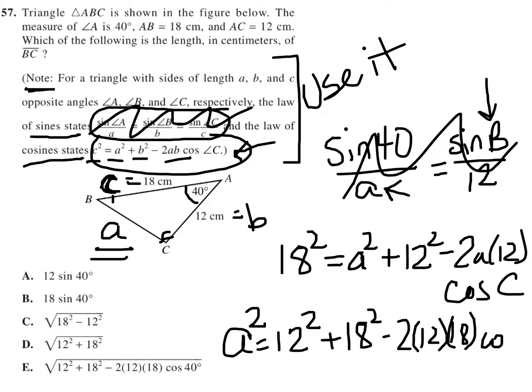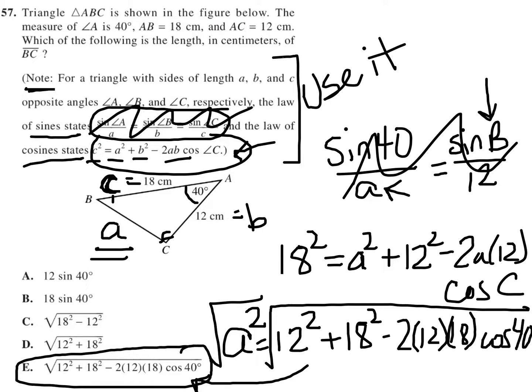which I do know is 40°. So since I want to figure out what a is, I'm just going to square root both sides. Looking at my answer choices, I see that what I have here looks exactly like answer choice E, which means that answer choice E must be the correct answer.